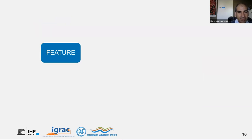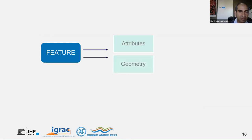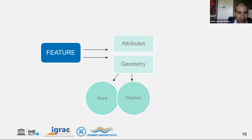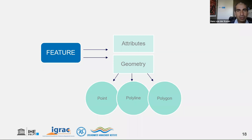Geometry can be an XY coordinate (sometimes Z) for a point, polylines where multiple points are connected, or polygons where three or more points form a closed shape — the last point connecting back to the first. These points are called nodes. A feature has attributes containing information in an attribute table, and geometry — points, lines, or polygons — for the geographic information.